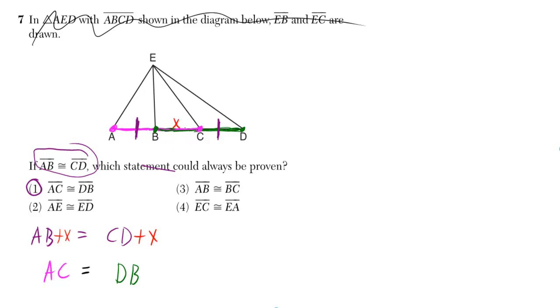If you add that segment I labeled X, then that does give you AC if you add it to AB, and it gives you DB if you add it to CD.